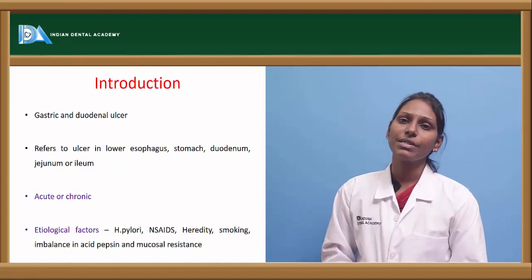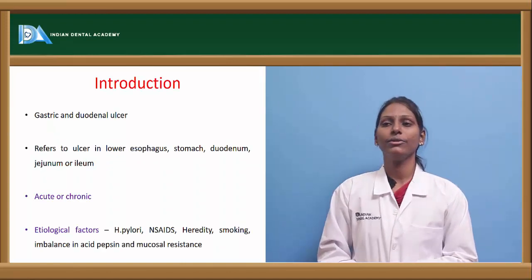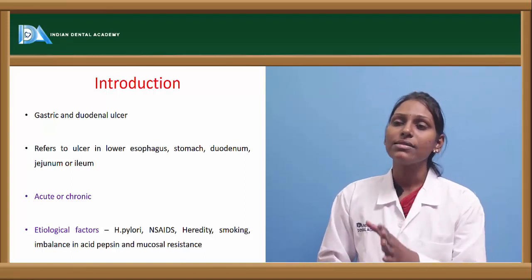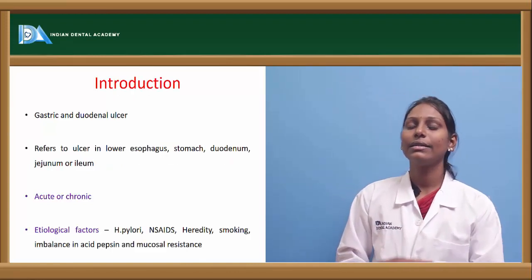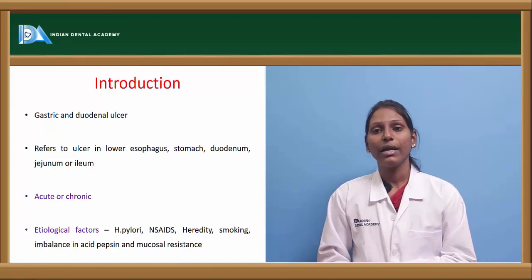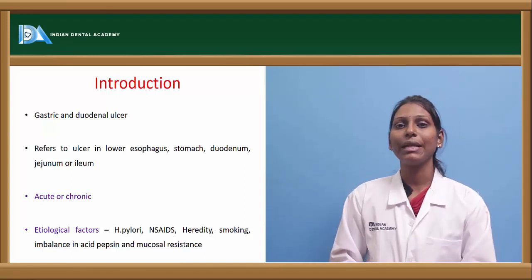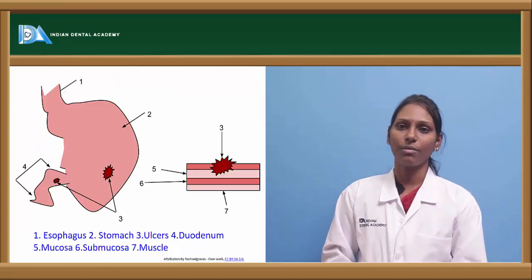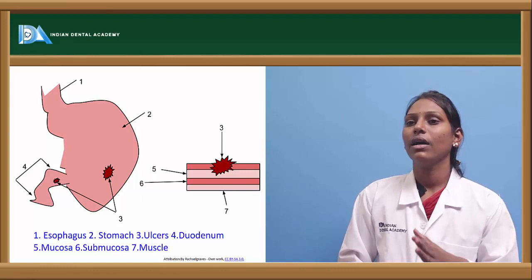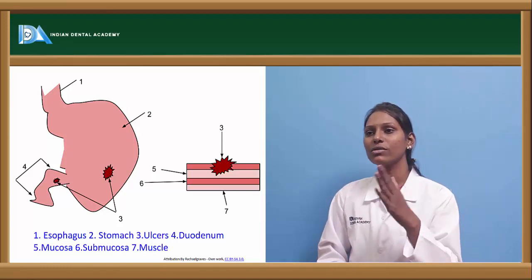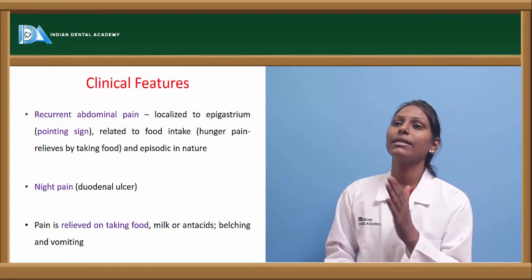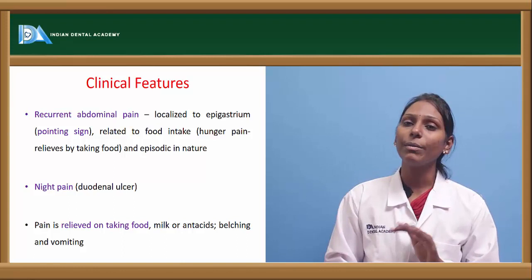H. pylori crosses the mucus layer of the stomach, dissolves the mucinous gel, and enters the epithelial cells, leading to their damage and ultimately to dyspepsia. Peptic ulcer disease is a common cause of dyspepsia, involving gastric or duodenal ulcers. It refers to any ulcer in the lower esophagus, stomach, duodenum, jejunum, or ileum. It can be acute or chronic. Etiological factors include H. pylori, NSAIDs especially aspirin, heredity, smoking, and an imbalance between acid-pepsin production and mucosal resistance.